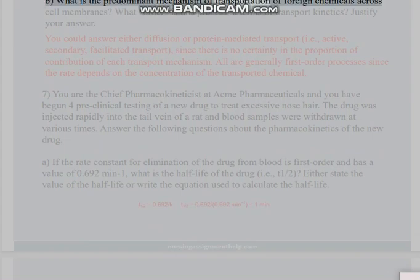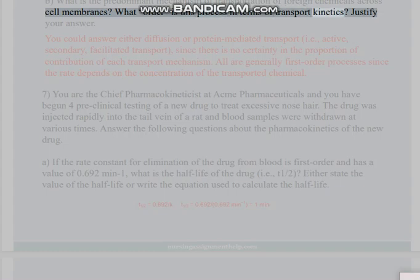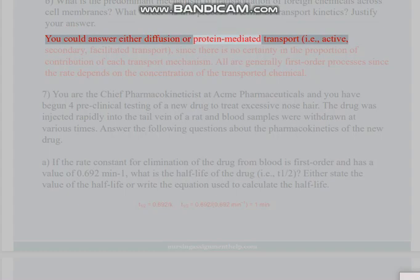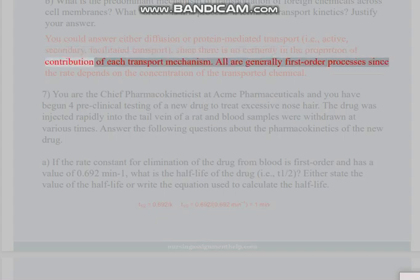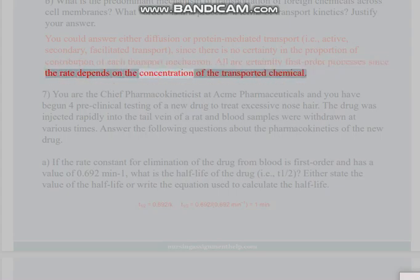Part B: What is the predominant mechanism of transportation of foreign chemicals across cell membranes? What order is this process in terms of transport kinetics? Justify your answer. You could answer either diffusion or protein-mediated transport (i.e., active, secondary, facilitated transport), since there is no certainty in the proportion of contribution of each transport mechanism. All are generally first-order processes since the rate depends on the concentration of the transported chemical.